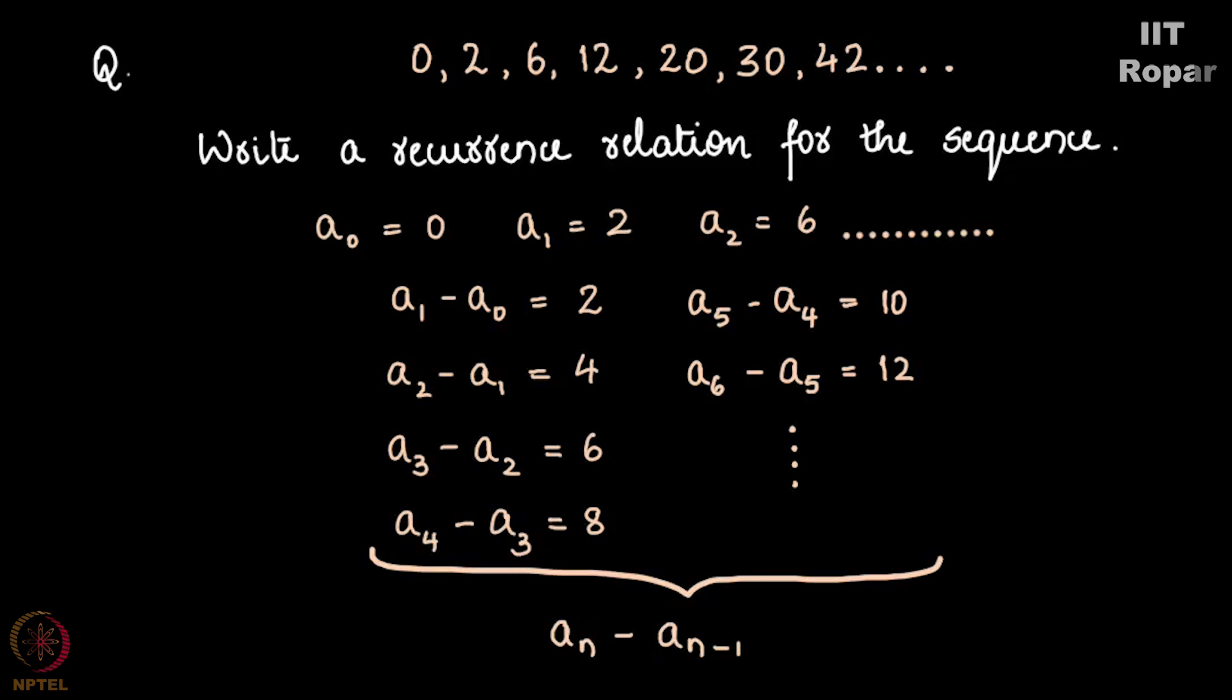You see that the differences can be written as An - An-1. Why? Because each time I am writing A1 - A0, A2 - A1, so I am taking the difference of successive terms. In general I can write it as An - An-1 = 2n. Did you observe that?